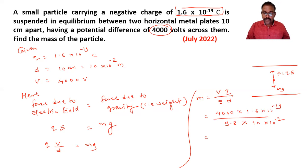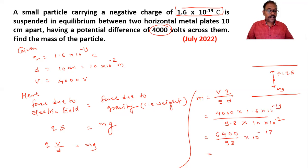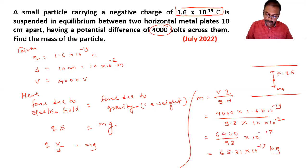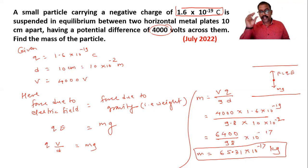4000 into 1.6 gives 64. Then 9.8 into 10 is 98, giving 10 raise to minus 17. After simplifying, we get 65.31 into 10 raise to minus 17 kilograms. In standard form, shifting the decimal point gives 6.531 into 10 raise to minus 16 kg. This is the mass of the particle.